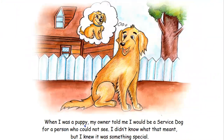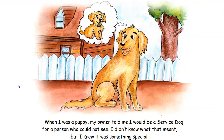When I was a puppy, my owner told me I would be a service dog for a person who could not see. I didn't know what that meant, but I knew it was something special. Take a look at these illustrations — where is our friend Abe? Good job! He's outside, right? We can tell he's outside by the tree illustration. There's a fence here.